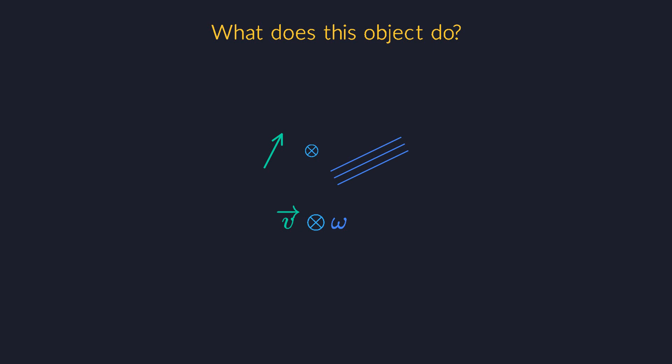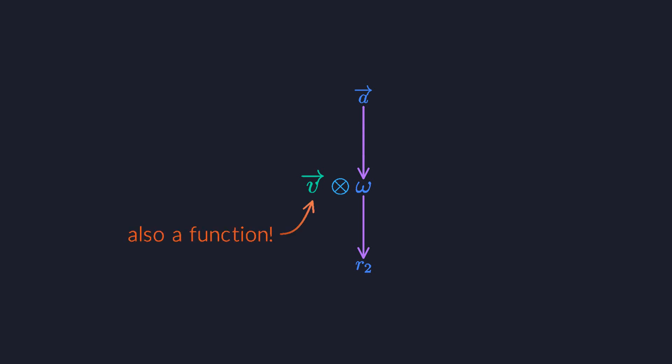Well let's see, it has two parts. The dual vector part is also known as a one-form. We defined it earlier as a linear function that takes a vector as input and returns a real number. Now the second part is a vector, and I want to convince you that it can also be seen as a function. It takes a dual vector as input and returns a real number.